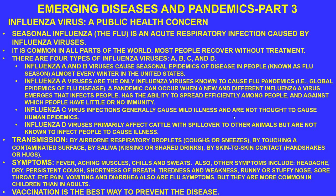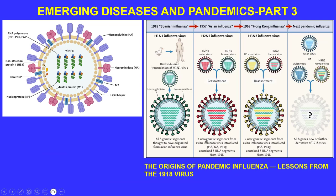Symptoms of influenza include fever, aching muscles, chills, and sweats. Other symptoms include headache, dry persistent cough, shortness of breath, tiredness and weakness, runny or stuffy nose, sore throat, eye pain, and vomiting and diarrhea. Some of these symptoms, like vomiting and diarrhea, are seen more commonly in children than in adults. The best way to prevent influenza is vaccination.